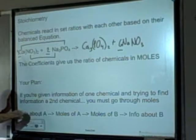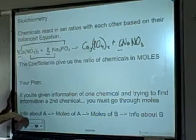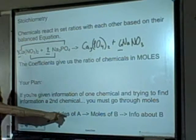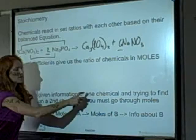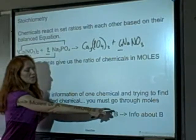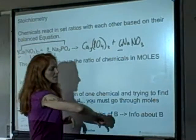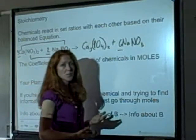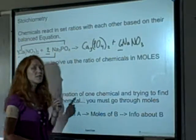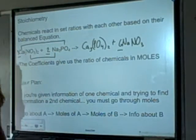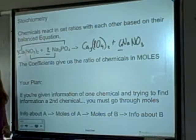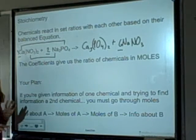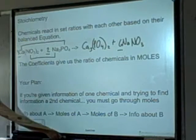Whatever information you have about the first chemical, turn it into moles of that chemical, relate it to moles of the other chemical, and then you can take those moles and turn them into liters using molarity, or turn them into grams using the molar mass — whatever you need.